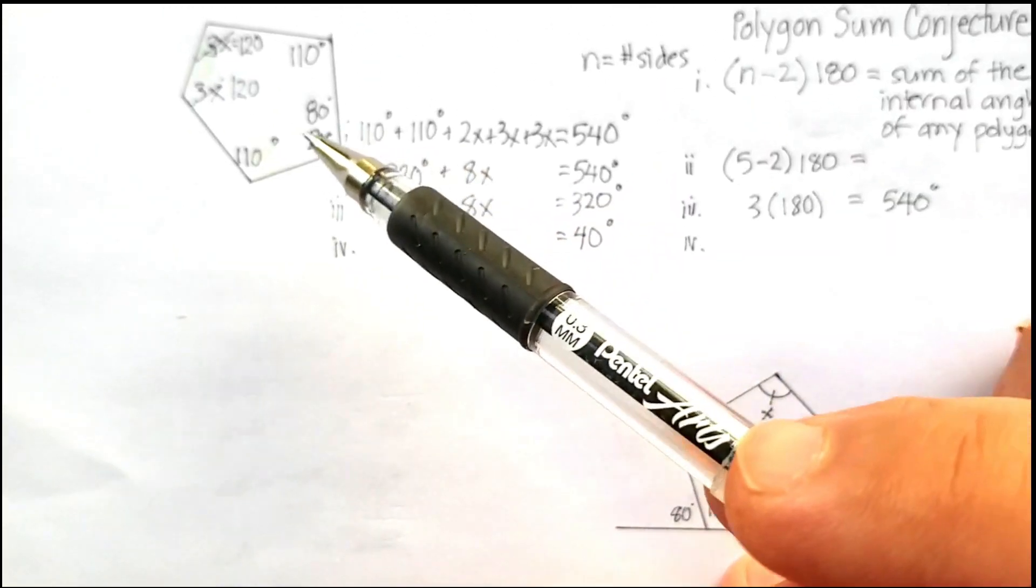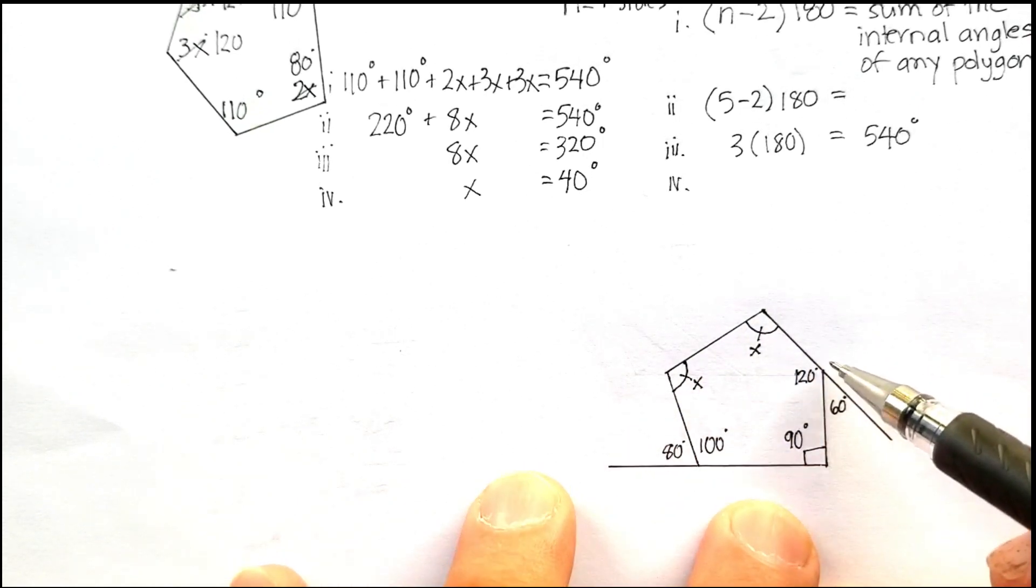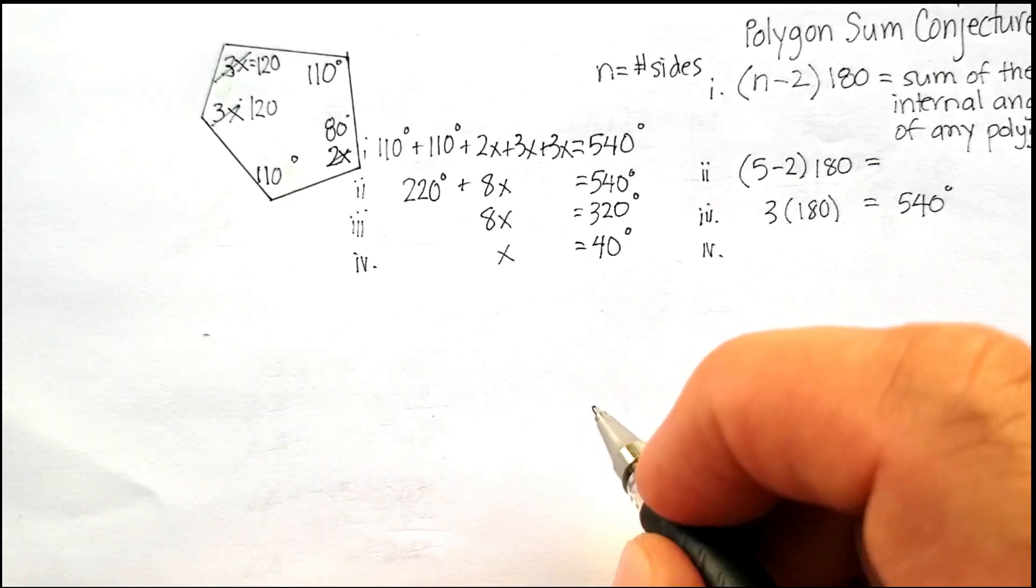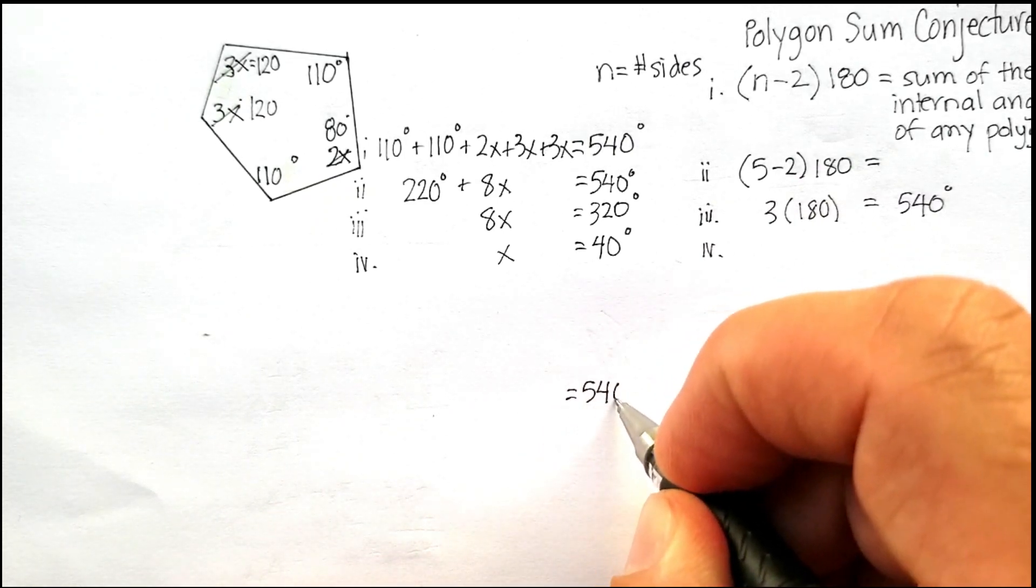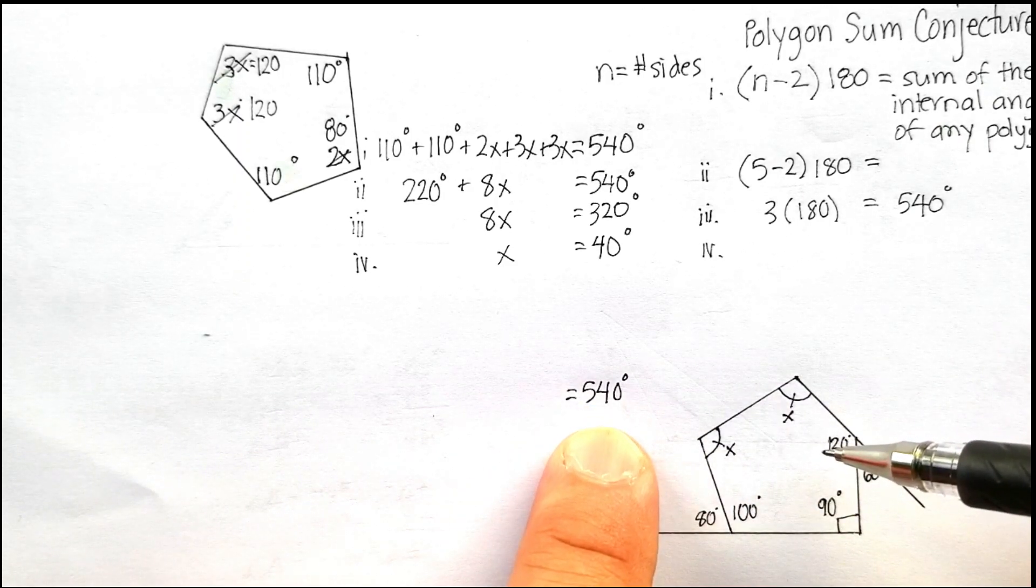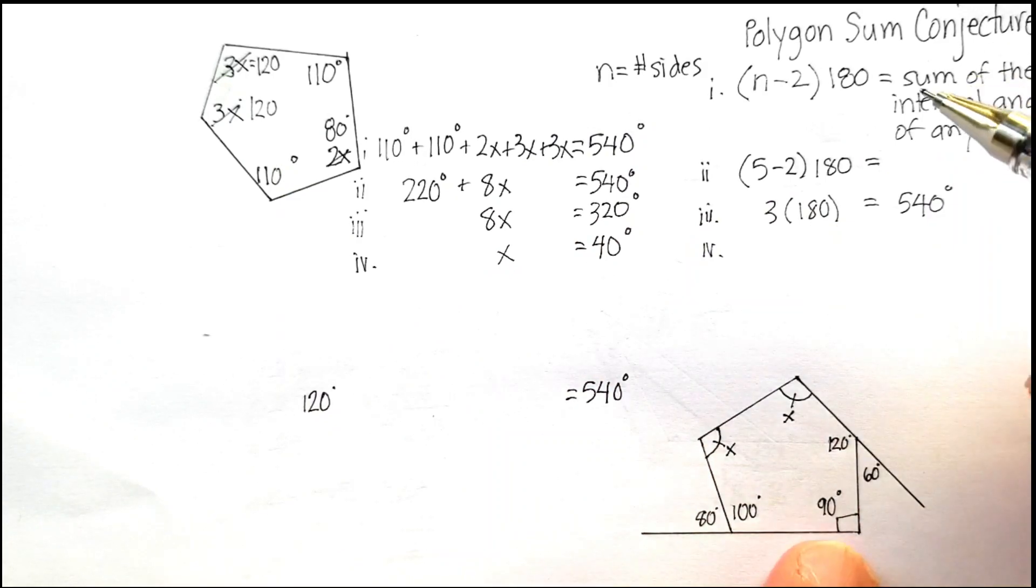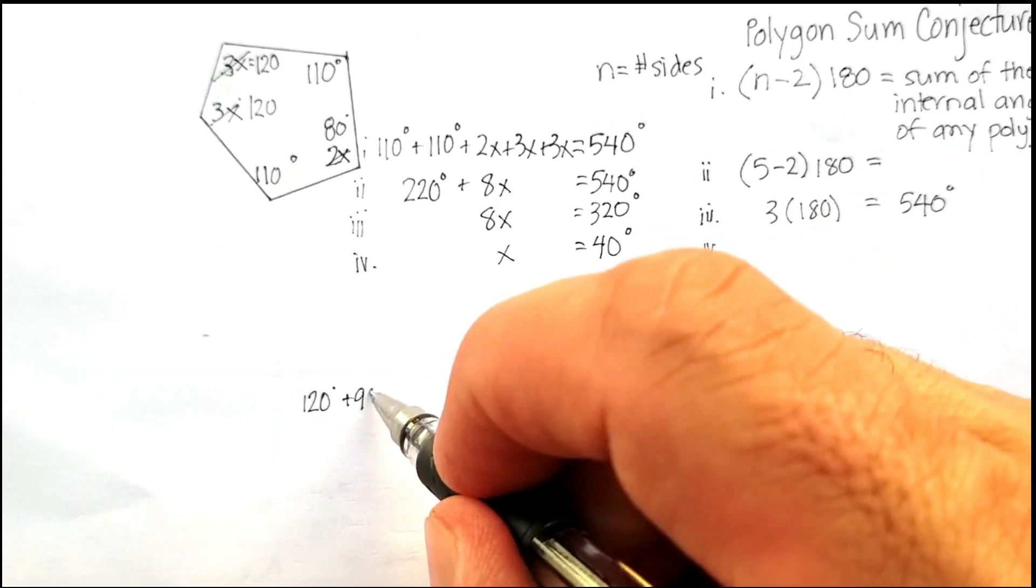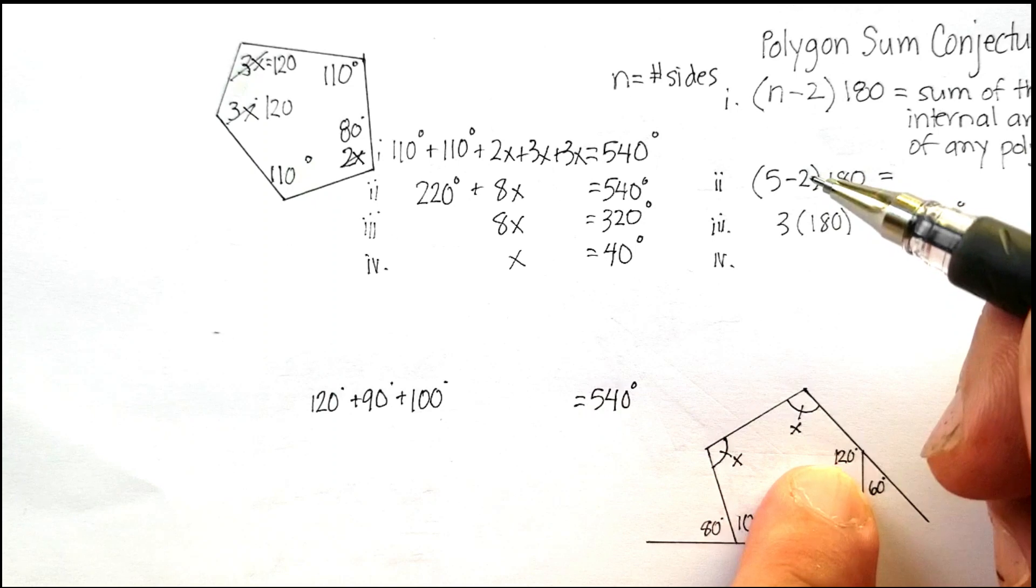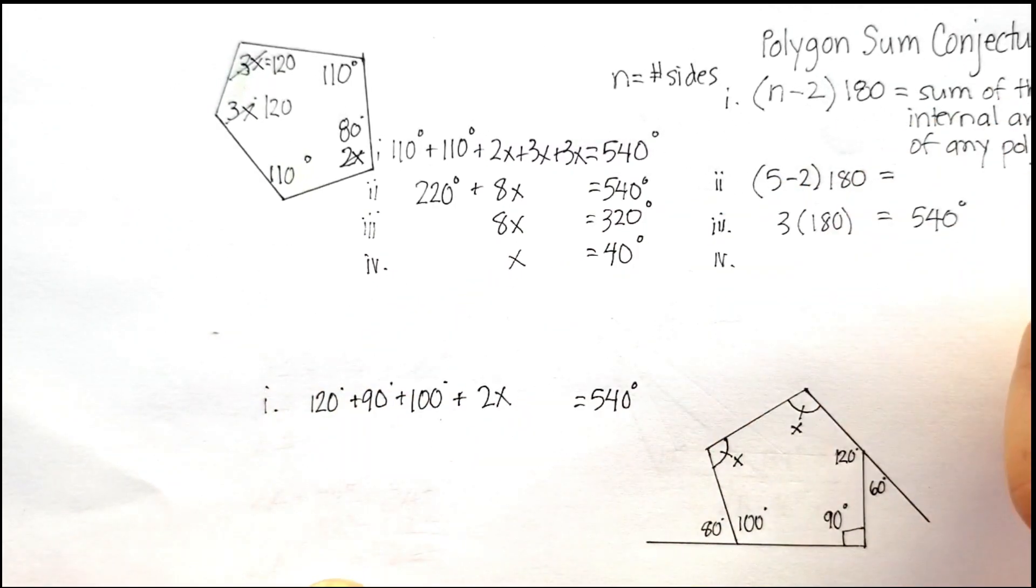Now similarly to this problem up here, I have a 1, 2, 3, 4, 5 sided figure. So I know that the internal angles here will equal 540 degrees. And I know that if I add all these internal angles together, it will equal 540. So I'm going to add 120 plus 90 plus 100 plus x plus x, or just plus 2x.